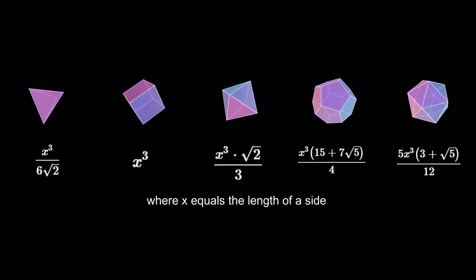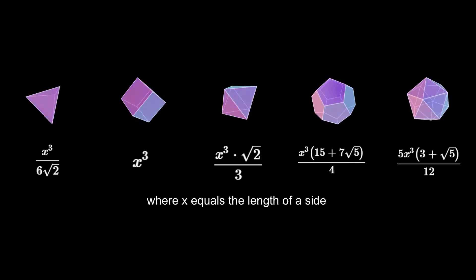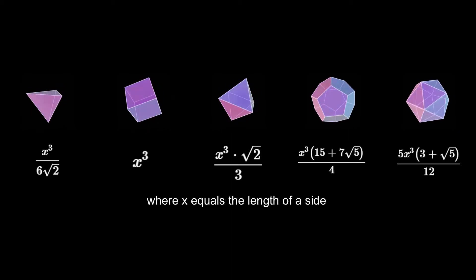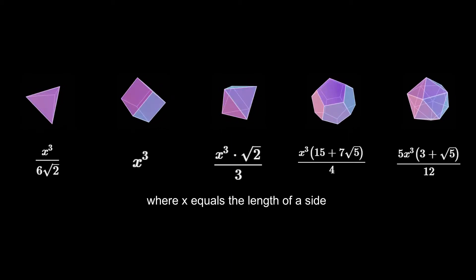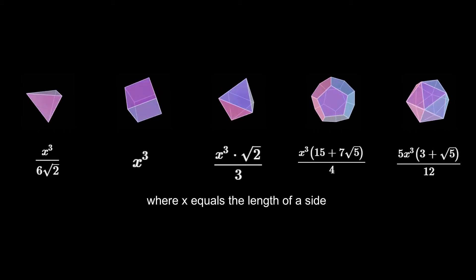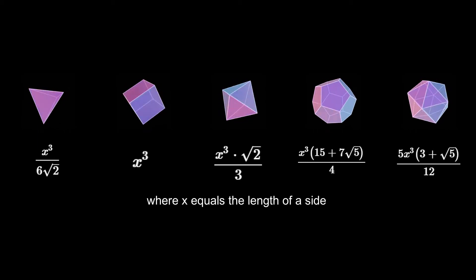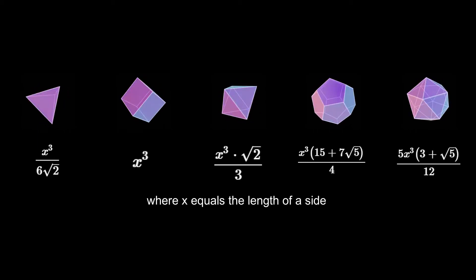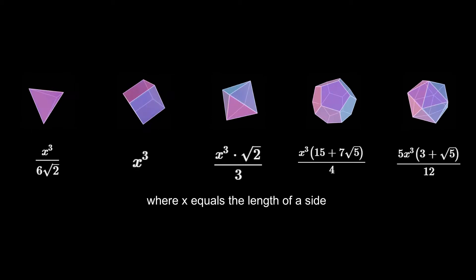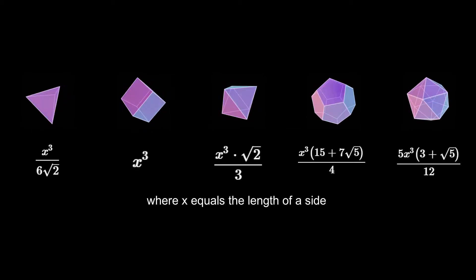The platonic solids — you've probably heard of those before. The tetrahedron, the cube, the octahedron, the dodecahedron, and the icosahedron. You've probably seen the formulae for each of their volumes. But have you ever wondered how we got those numbers? Do they follow some kind of hidden pattern? What if there was a general formula where we can insert the values describing the platonic solid and calculate its volume? And why does it matter when there's only 5 of them?